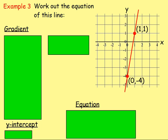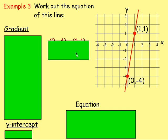Example 3: work out the equation of this straight line. It's drawn for us and we have two points — 1,1 and 0, negative 4. Write down these two points at the side: 0, negative 4 and 1, 1.